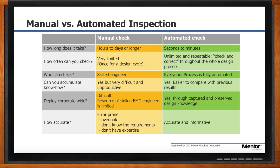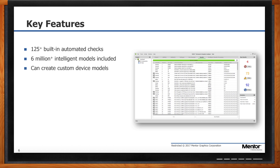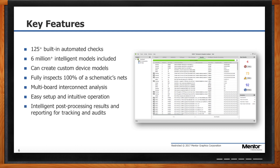Let's dive deeper into how exactly this thing works. Expedition Schematic Integrity Analysis has more than 125 built-in automated checks performed on every single net on your schematic. As it performs those checks, it uses a model library of over 6 million models. Because it uses those models, it knows for a particular IC what's a power pin, what's a ground pin, what's an input, what's an output, and how that pin is supposed to be used based on the datasheet specification — checking every single pin on every single part on every single net.